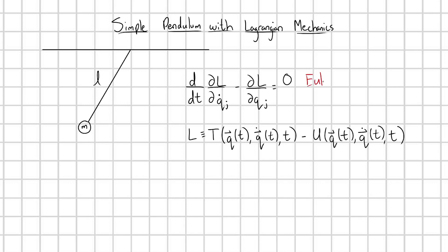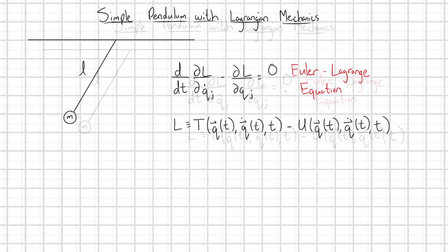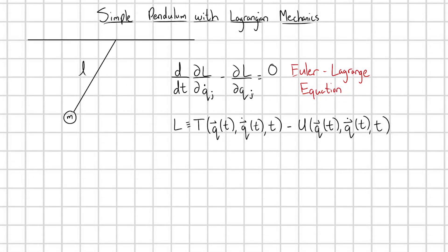Right here I wrote out the Euler-Lagrange equation for us. This is our bread and butter in Lagrangian mechanics, just like F = ma is our bread and butter in Newtonian mechanics. This is our fundamental starting point in order to tackle dynamics problems. Now, the Lagrangian L is defined as the kinetic energy of my system minus the potential energy of my system.